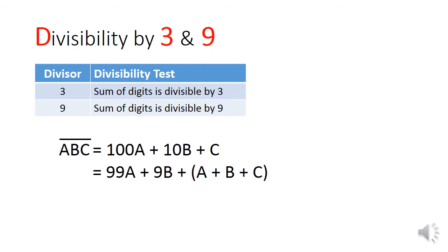The divisibility test for 3 and 9 requires you to sum up the digits and check if that sum is divisible by 3 or by 9. The logic behind this test is that if I express the concatenated number as an algebraic expression like a 3-digit number a, b, c, ABC is actually 100a plus 10b plus c. The trick is then to split the 100a into 99a plus a and the 10b into 9b plus b.